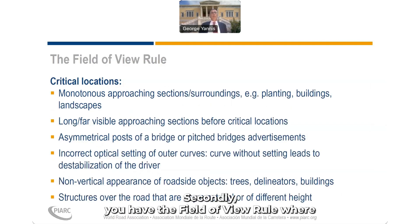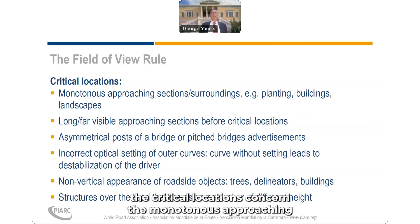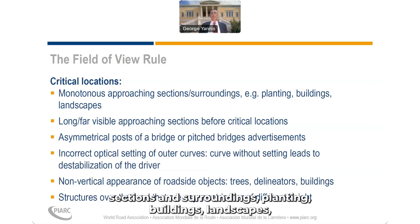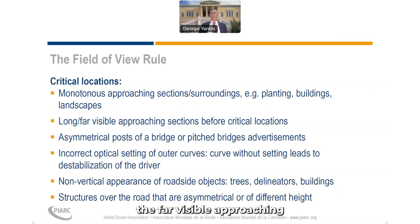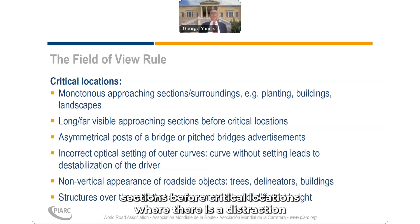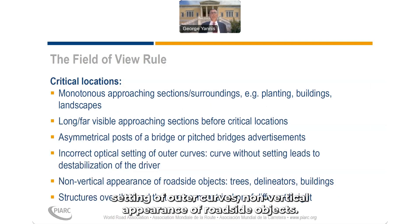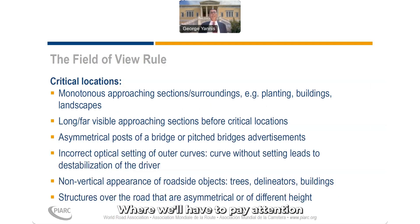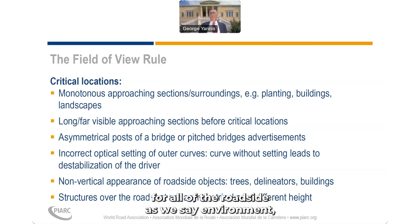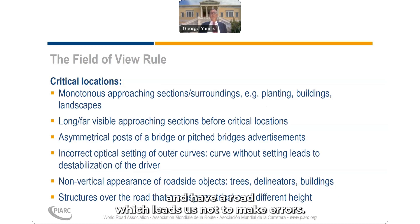Secondly, we have the field of view rule. The critical locations concern monotonous approaching sections and their surroundings — buildings, landscapes — sections not far visible before critical locations where there is distraction of the driver, asymmetrical posts of a bridge, incorrect optical setting of outer curves, and non-vertical appearance of roadside objects. We have to pay attention to all the roadside environment and design a road which does not lead us to make errors.